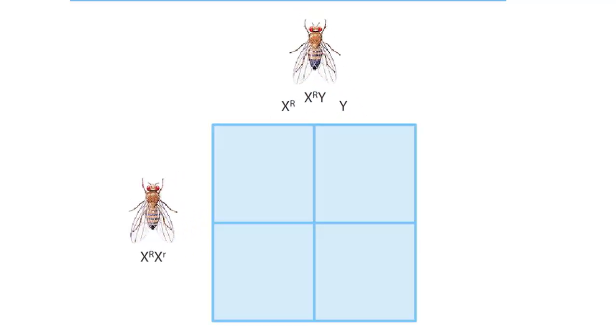In the F1 generation, two red-eyed flies mate. The female is heterozygous for red eyes, meaning she has one recessive allele for white eyes. The male has only one allele, which is for red eyes.